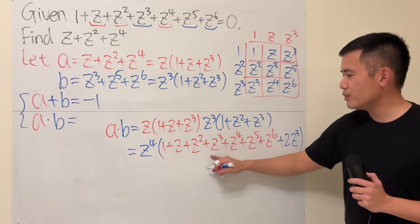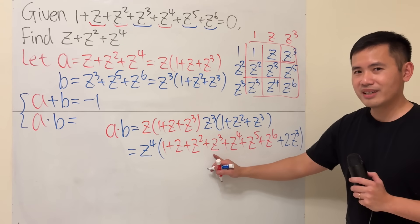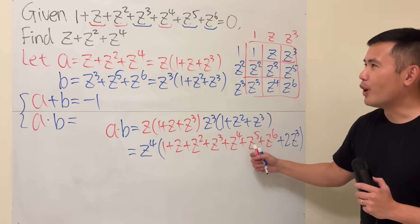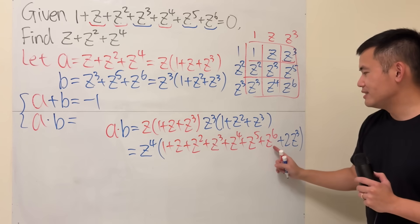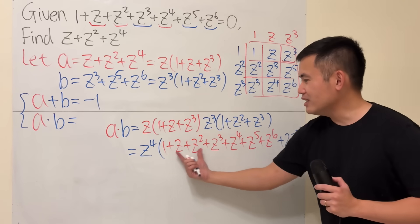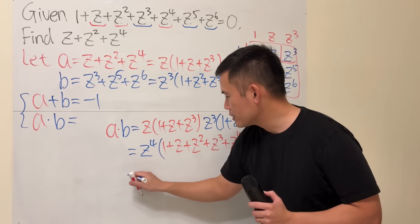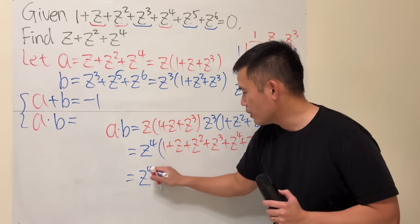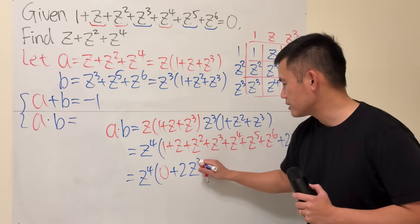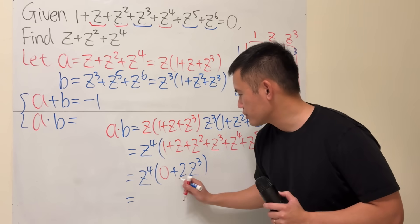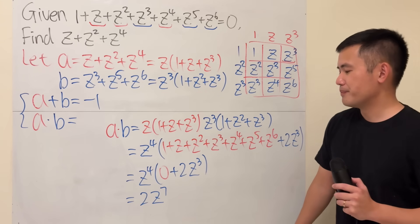Now, why did I bother to break it down like this? Why didn't I put 3z to the third power? Well, remember, originally we were given that equation: 1 all the way to z to the sixth power. These right here add up to be 0. So right here, we are just looking at z to the fourth times 0 plus 2z to the third power, which is just 2z cubed. Okay, good.